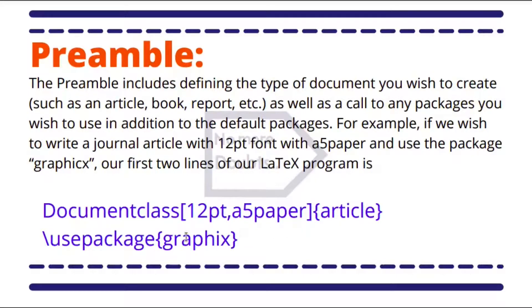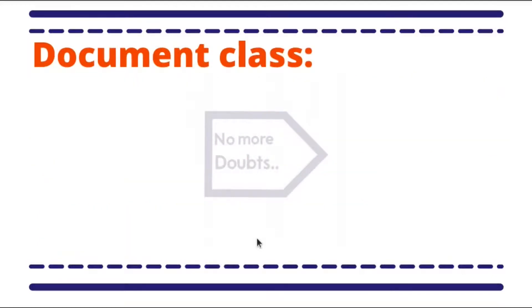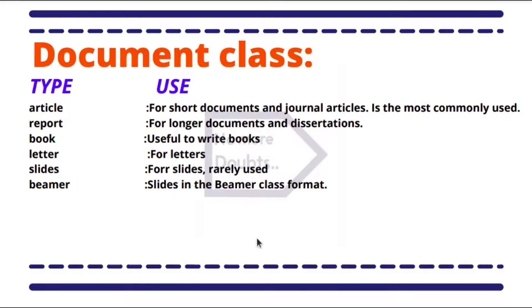Next, document class. There are mainly some types of document classes and we will see the usage of those. Article is the most commonly used type of document class; this is used for short documents and journal articles. Report is also one of the most commonly used for longer documents and dissertations. Book is useful to write books and theses for doctorates. Letter is for letters. Slides is for slides, rarely used. And beamer is also a type of slides which is used more when compared to slides, based on the feature availability in beamer.